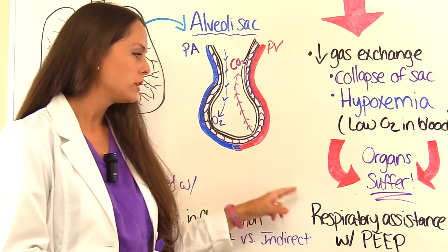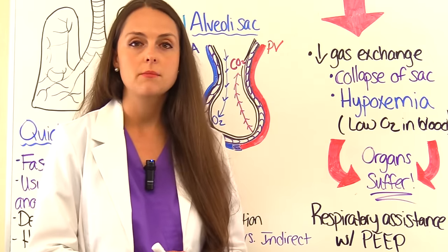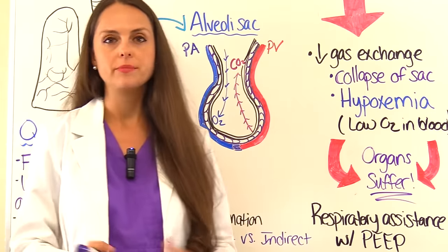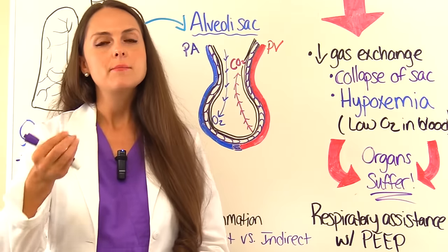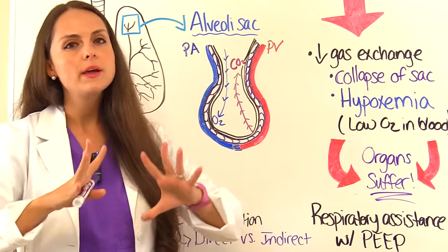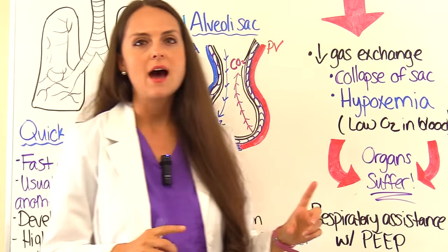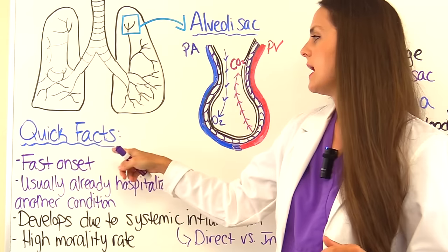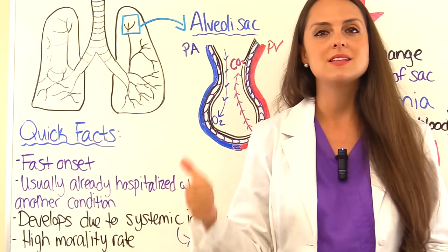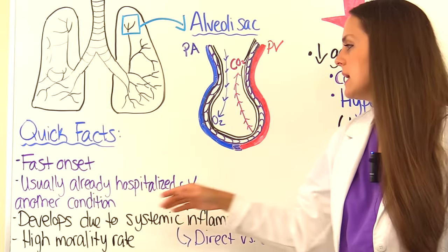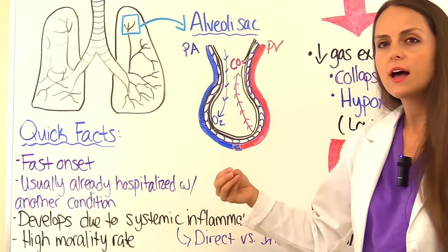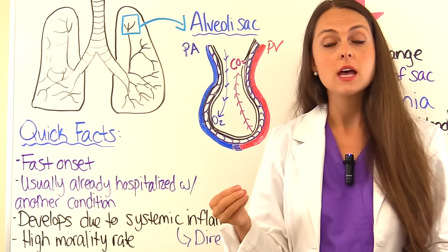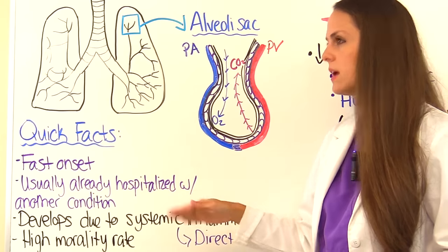Patients in severe ARDS will need respiratory assistance, usually mechanical ventilation with PEEP — positive end-expiratory pressure — which helps open up the collapsed sacs and improve gas exchange. ARDS has a fast onset; it happens suddenly and usually occurs in patients who are already hospitalized for another condition, such as severe burns or sepsis, which is one of the most common causes.